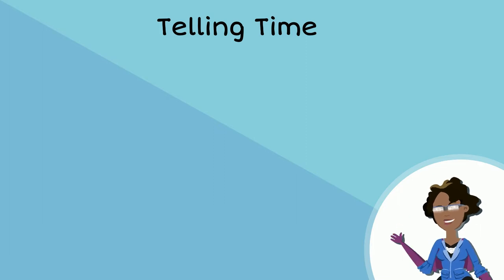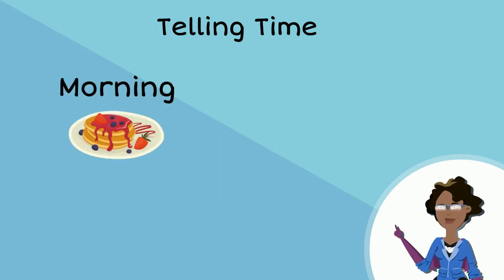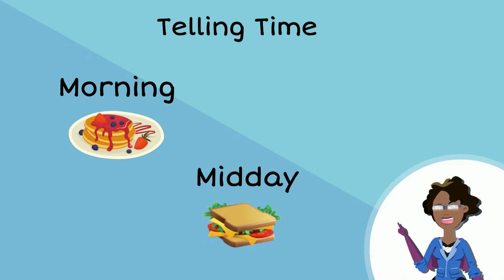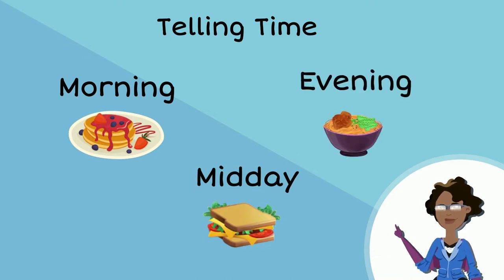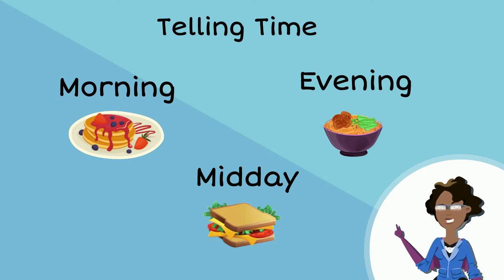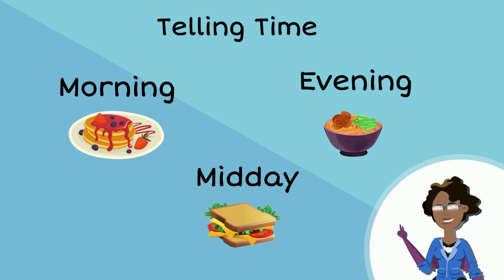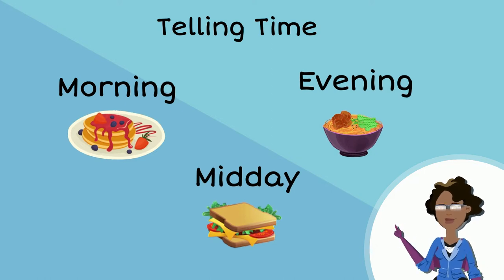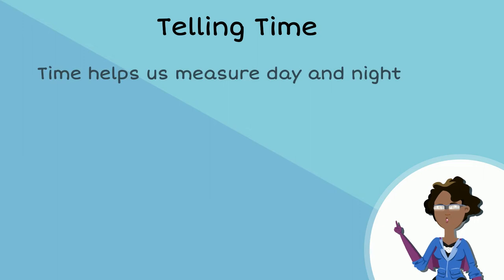When we wake up we have breakfast in the morning, lunch in the middle of the day, and dinner in the evening. We sometimes wake up at the same time in the morning and go to bed at the same time at night. Time is very important as it helps us to measure day and night.